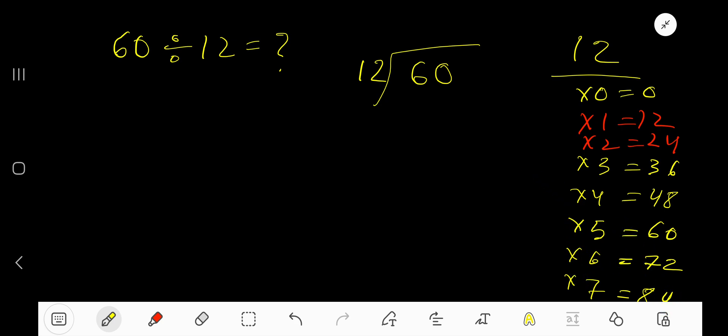12 goes into 6 how many times? 0 times, as our current dividend 6 is less than 12. So 0 times 12 gives you 0. Subtract 6 minus 0, bring down this 0 to make 60.